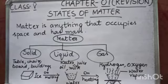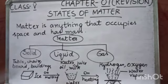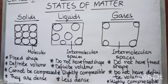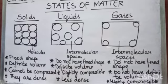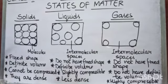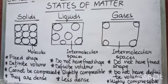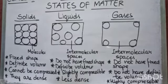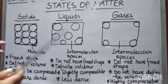Now let us study about the three states of matter — solids, liquids, and gases — and see the arrangement of molecules. Matter is made up of tiny molecules, and the arrangement of molecules in these three states of matter makes them different from each other.